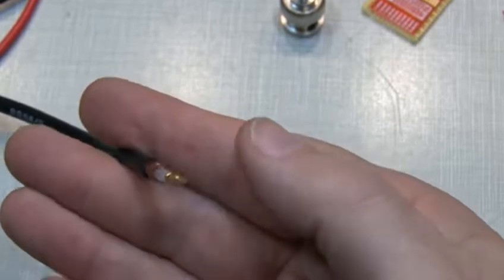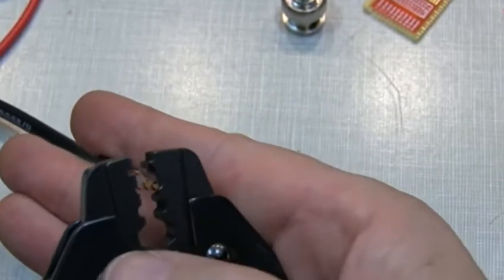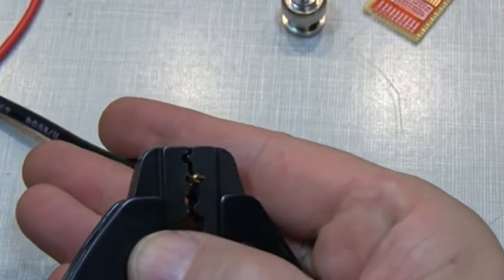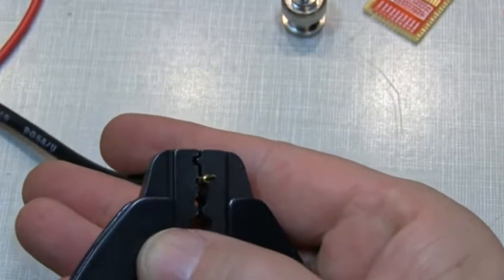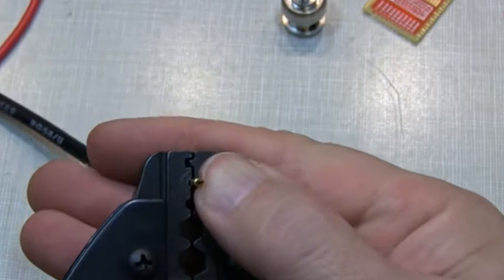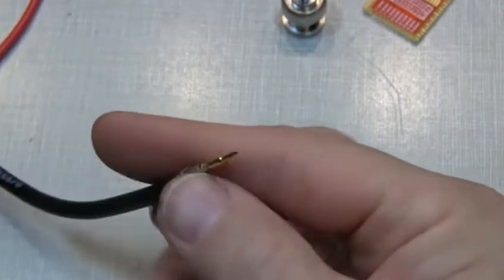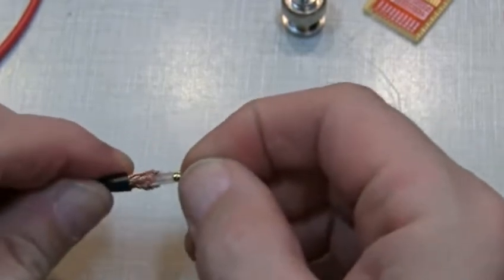So this first crimp is on the center conductor, and it's always a little tricky sometimes to get everything lined up here. It feels like you need three hands, but I think we can get this thing lined up and give ourselves a good crimp here. There we go. Now just double-check that that's good and tight and not coming off.